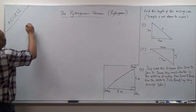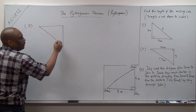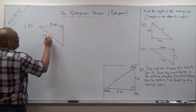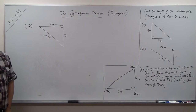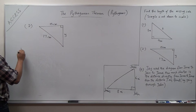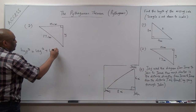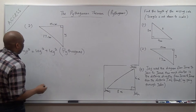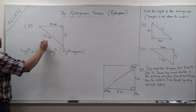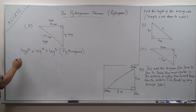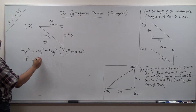Number two: we have a right triangle. This is 15 centimeters, this is 17 centimeters, and we need to find y. We still say Pythagorean theorem: hypotenuse squared equals leg squared plus leg squared. The hypotenuse is 17, one leg is y, and the other leg is 15. So we have 17 squared equals y squared plus 15 squared.